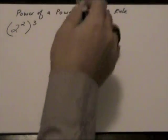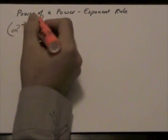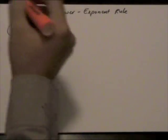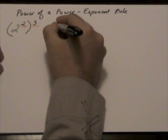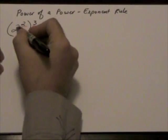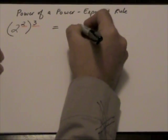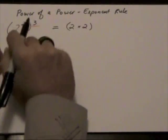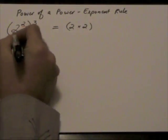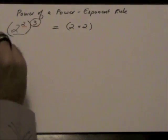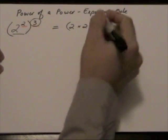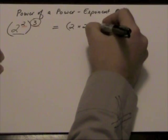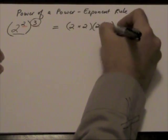So what we have here is an exponent and another exponent. What we're going to do is rewrite what this expression really equals. So we have 2 to the power of 2 in brackets means 2 times 2. Whatever we have here in the brackets is going to be done 3 times. So within the brackets, we have 2 times 2. We're going to have 2 times 2 being done 3 times.